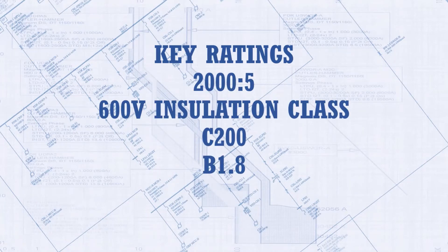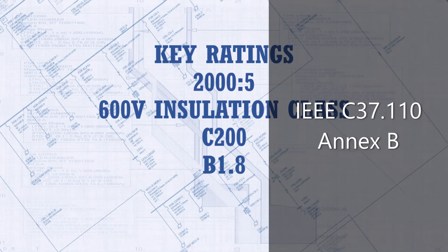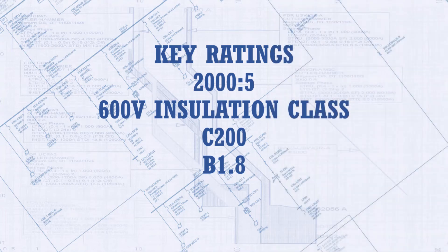Let us quickly recap the key ratings of the CT under testing on this presentation. We have a 2,000 to 5 ratio, 600 volt insulation class NC protective relaying accuracy class C200 at a standard burden of B1.8 ohms. It is important to point that the typical standard burden for NC accuracy class C200 is actually 2.0 ohms, and by standard we mean a burden at a power factor of 0.5, referred to IEEE C37.110 Annex B. Also, accuracy class is a standard way of describing CT performance. For example, here it means that this CT is capable of delivering 200 volts on its terminal to a standard burden of 1.8 ohms with an error of 10% or less at 20 times its secondary current rating, that is, 20 times 5 equals 100 amps.